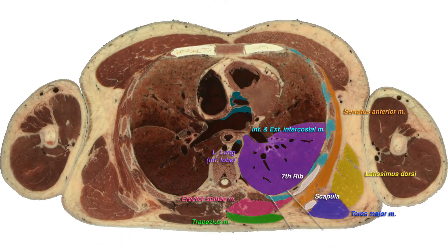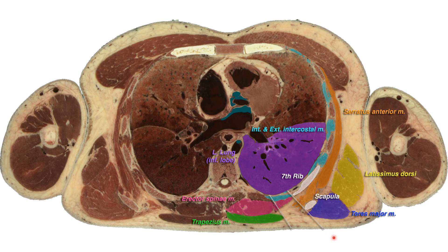In this picture you can see a transverse section at the level of the triangle of auscultation. Observe from posterior to anterior: the green color shows the trapezius muscle, and below that you can identify the seventh rib whose outer surface gives origin to the serratus anterior muscle fibers. Inside we can identify the left lung inferior lobe, present at this level on both right and left sides. At the left side you can also identify the cardiac orifice of the stomach — that we have to remember.